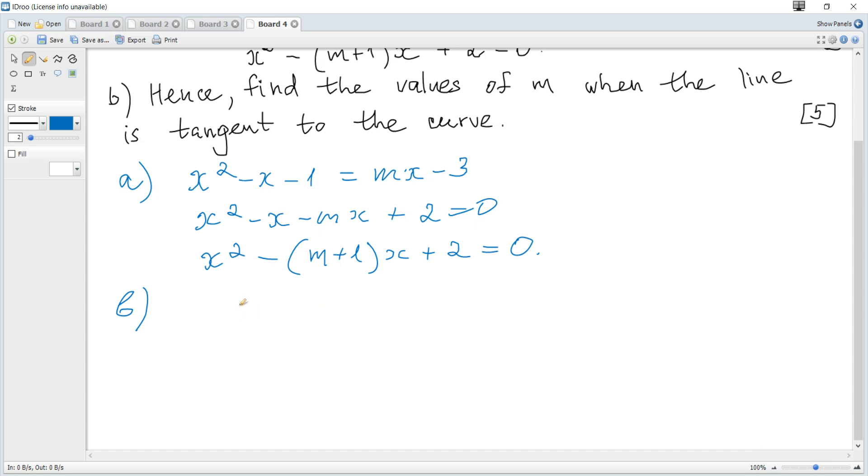Because for quadratic, roots are minus b plus minus root of d over 2a, and when discriminant equals 0, there is only one root.